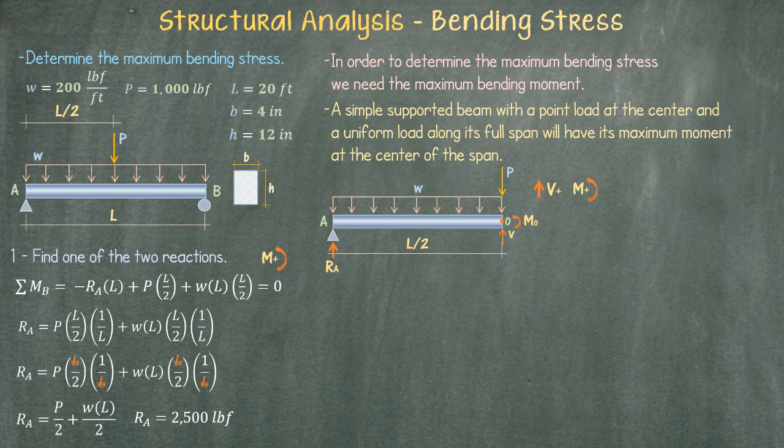Before jumping into our next set of calculations, we can determine the section modulus for our given section. Since the cross section for the beam is a rectangle, we can determine the section modulus by multiplying the base of the section times the height squared and divide the whole thing by 6. That will give us 96 cubic inches.